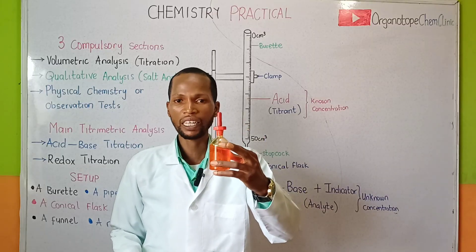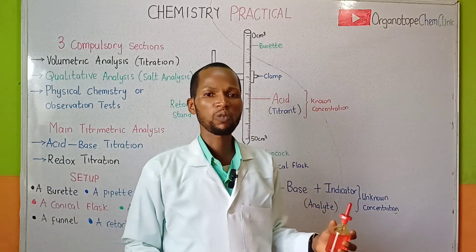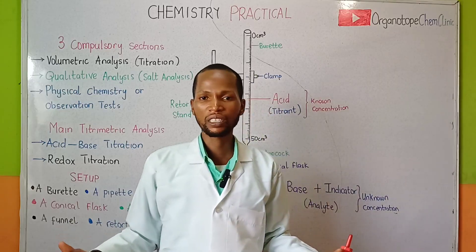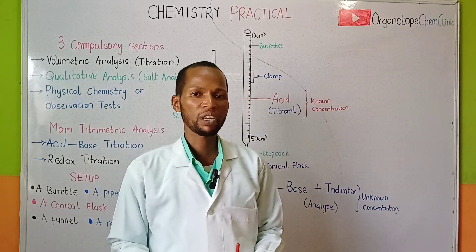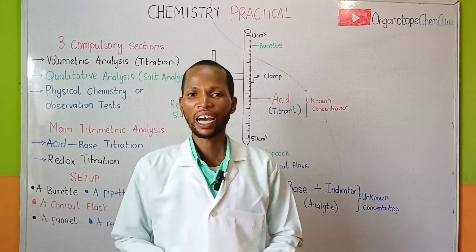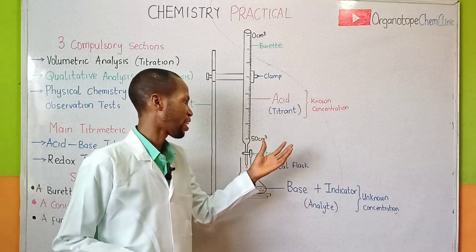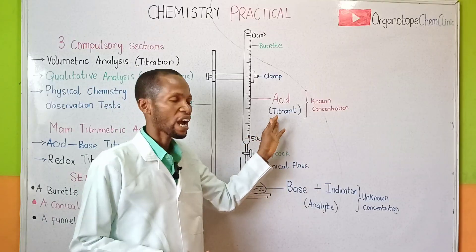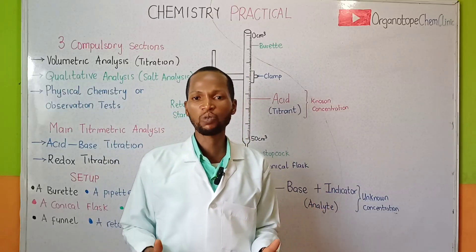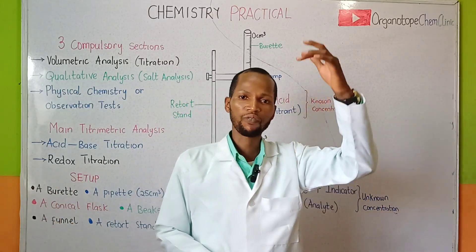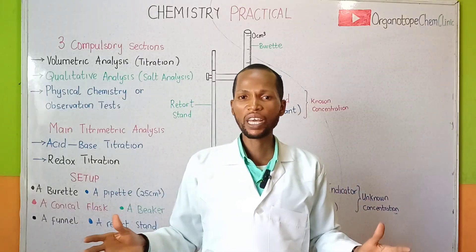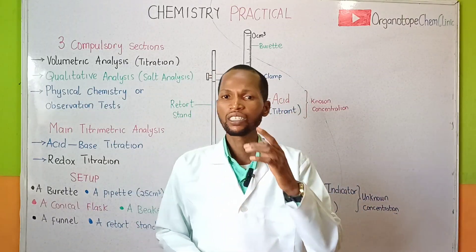The indicator is a dye — we need to add it to our analyte before we commence the titration. This is methyl orange, an indicator for titrometric analysis. We use methyl orange when dealing with strong acid/strong base, or strong acid/weak base titrations. We add this indicator to our analyte because the solution of the titrant (the acid) and the solution of the analyte (the base) are both colorless, and we need the indicator to identify the color change that signals the end point.